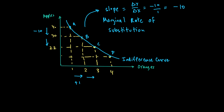Similarly, moving from B to C, the MRS becomes −8: for every 1 orange gained, 8 apples are lost. Moving from C to D, the value goes from 22 to 17, giving a change of −5, so the MRS is now −5. The negative sign simply means the graph is downward sloping, indicating that more oranges are needed to compensate for the loss of apples.